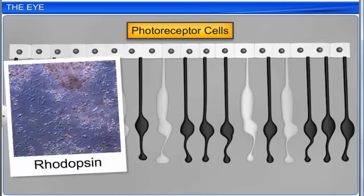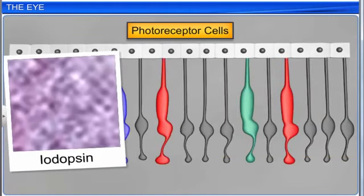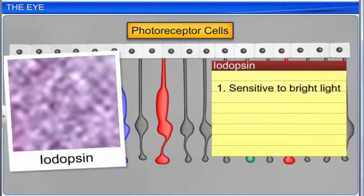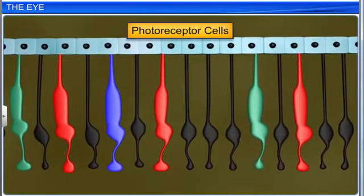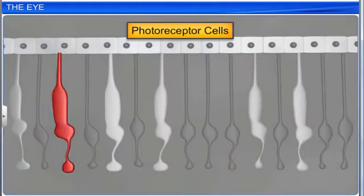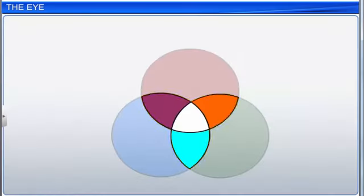A purple pigment called rhodopsin is present in the rods, which contains a derivative of vitamin A and is sensitive to dim light. However, the rods do not play any role in color vision. A violet pigment called iodopsin is present in the cones, which are sensitive to bright daylight, or photopic vision. Cones are of three types and contain different photopigments, and respond to red, green, and blue light radiations. Other colors are detected by simultaneous stimulation of more than one type of cones.